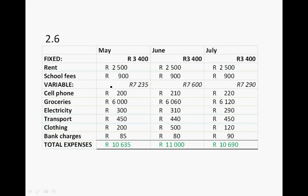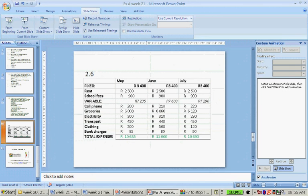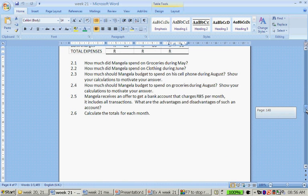Here is Mangella's completed budget. His fixed expenses were 3,400 rand each month. His variable expenses changed between 7,235, 7,600, and 7,290. So his total expenses were 10,635 rand, 11,000 rand, and 10,690 rand respectively.